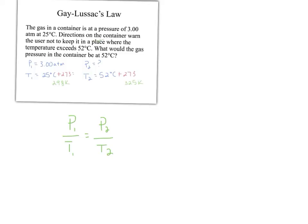So P1 is 3.00 ATM divided by 298 Kelvin, and that is equal to P2, our unknown variable, divided by 325 Kelvin.